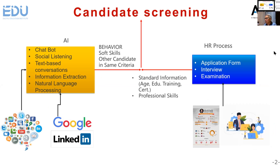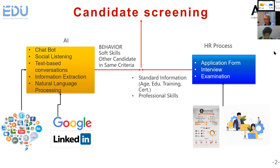In the Candidate Screening process, on the right-hand HR process, in the traditional way, when HR wants to select a candidate, they will consider from the application, then they do the interview and examination. The result from the HR screening will provide standard information such as education, training, certification, and professional skills.